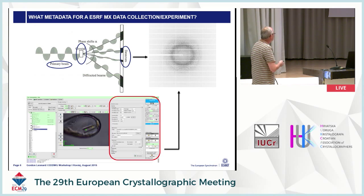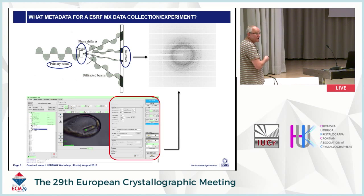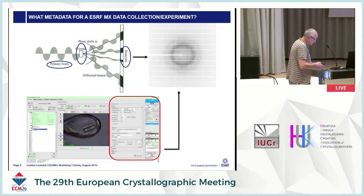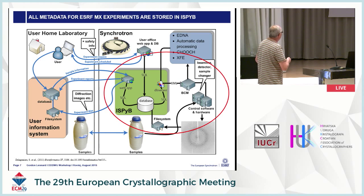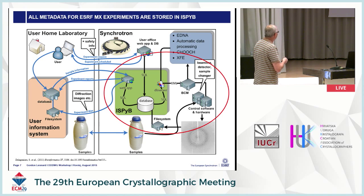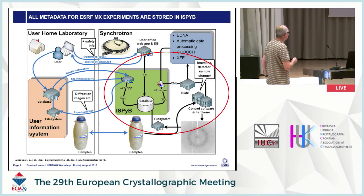So what metadata do we need to describe an MX data collection? Basically we need to know stuff about the primary beam, the incident beam, what we've done with the crystal, and also what our detector is like — what are the characteristics of our detector? All the metadata we collect are stored in iSpyB, which stands for Information System for Protein Crystallography Beamlines. Pierre has already explained this quite nicely, but basically all the metadata we need are stored in iSpyB.